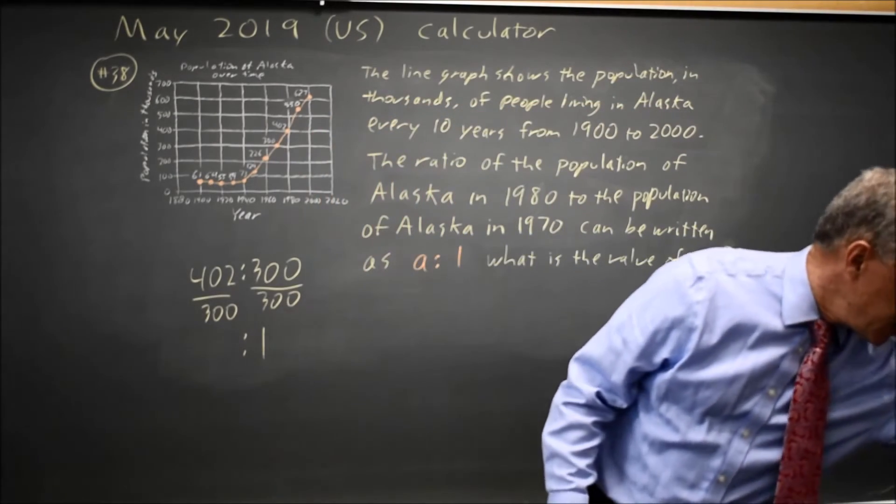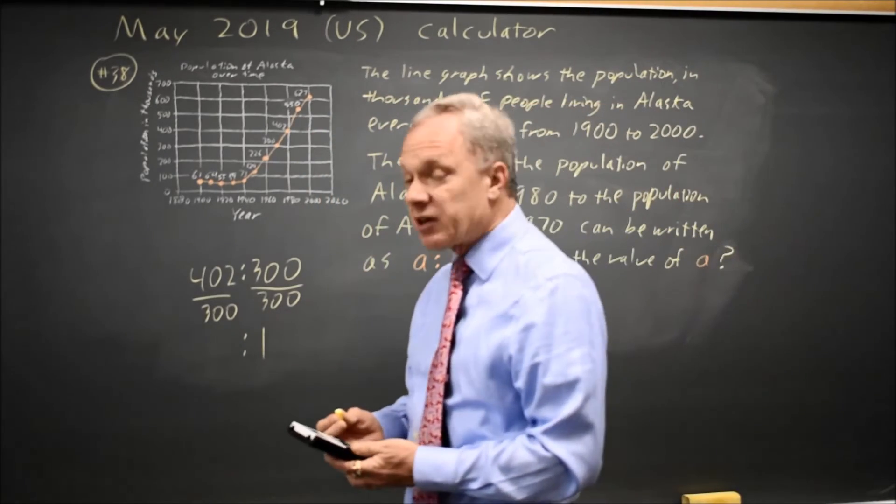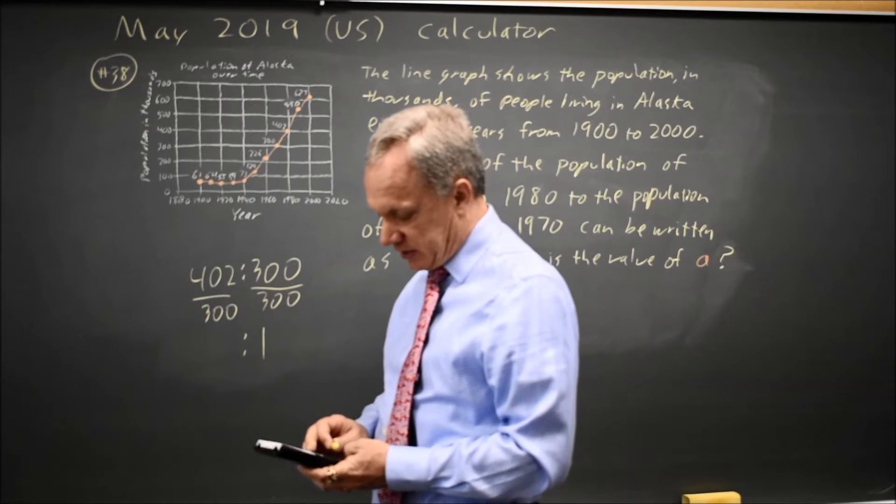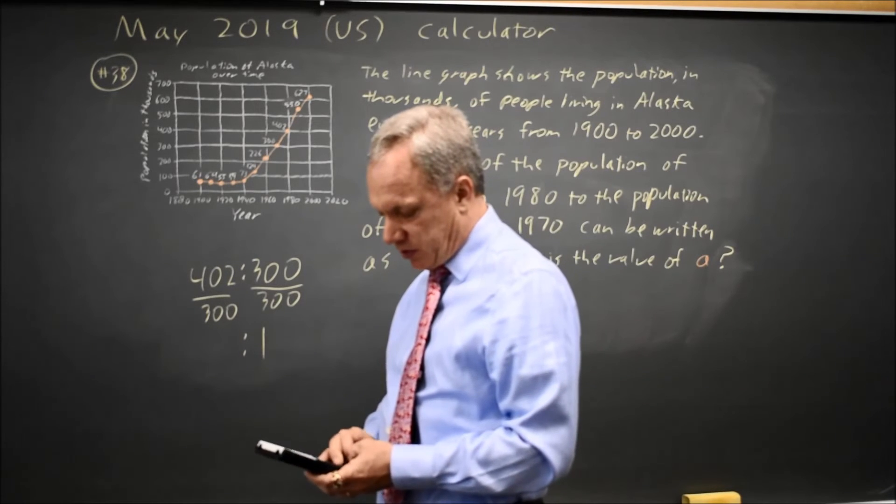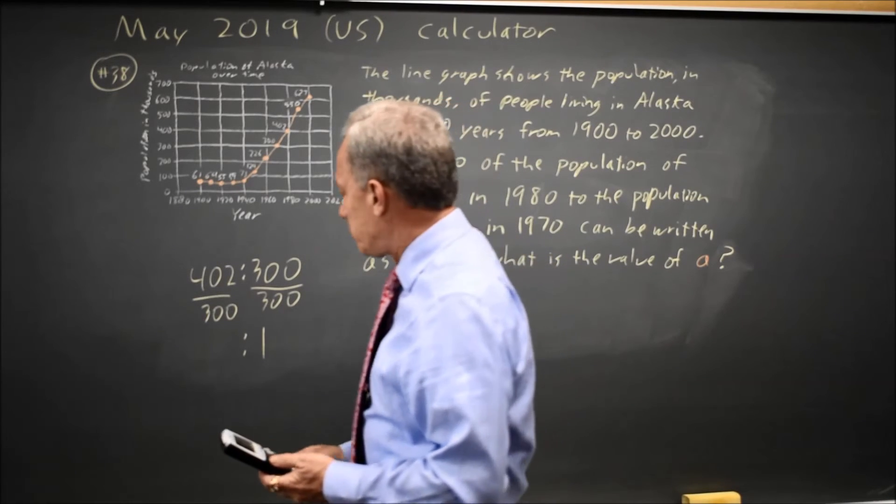I could simplify that by hand, but I don't want to. I have a graphing calculator. My graphing calculator says 402 over 300 is 1.34.